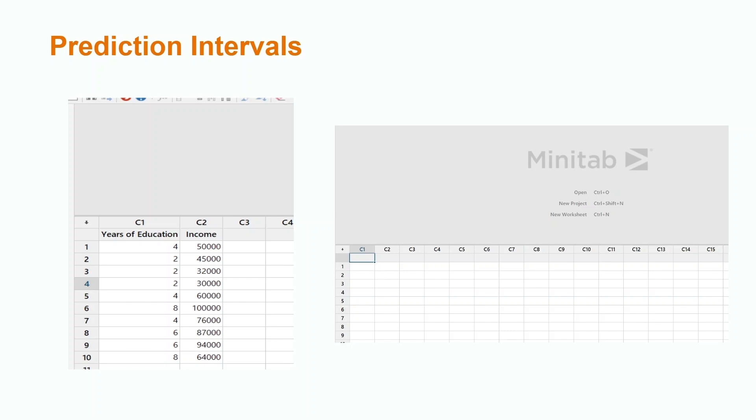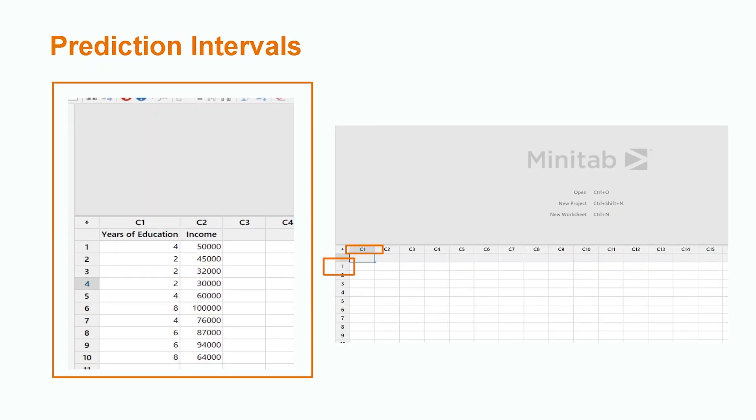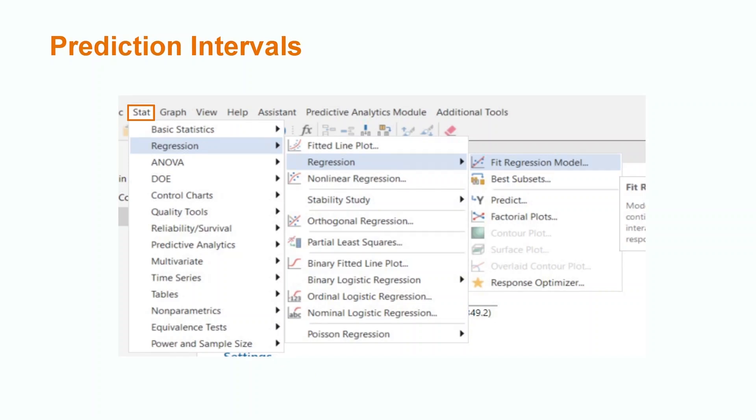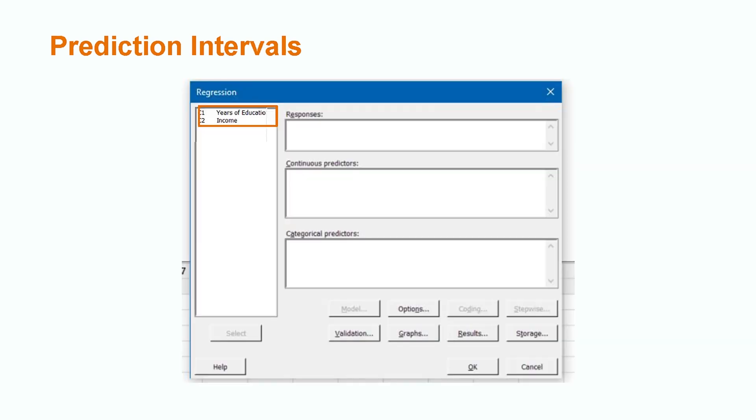We begin the process of finding a prediction interval using Minitab by entering our data. We do this by entering the name of our variables in the columns and entering our values in the rows. We then go to the stat option on the ribbon. Next we will select regression and then fit regression model. We will put income in the responses box by double clicking it and then we will put years of education in the continuous predictors box and select ok.